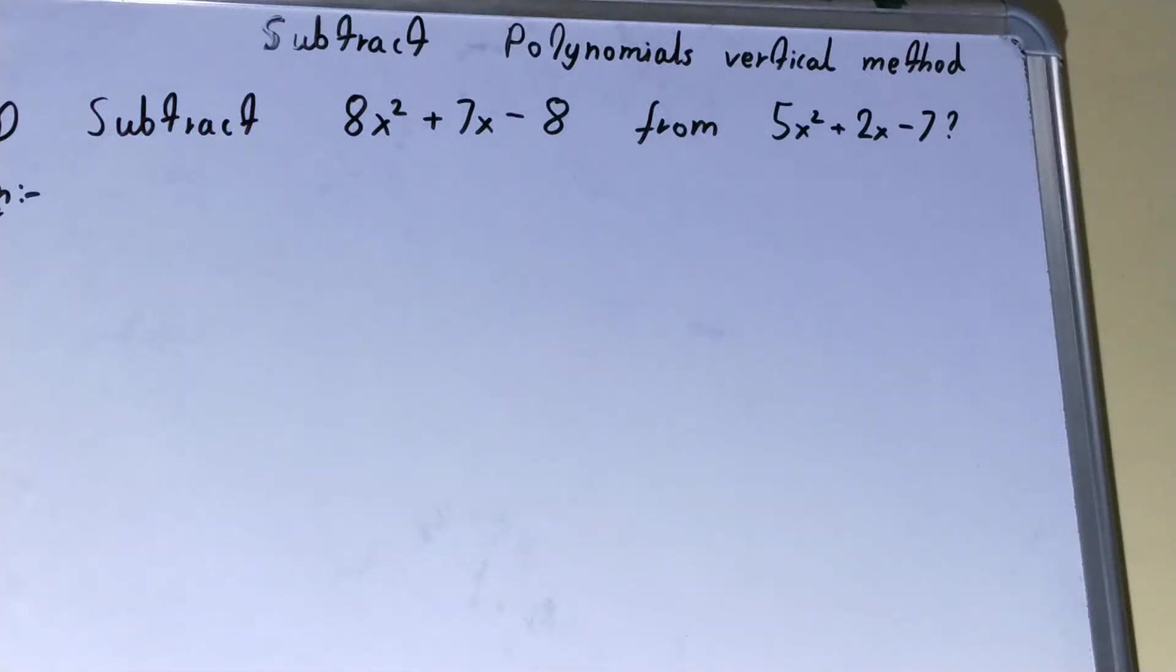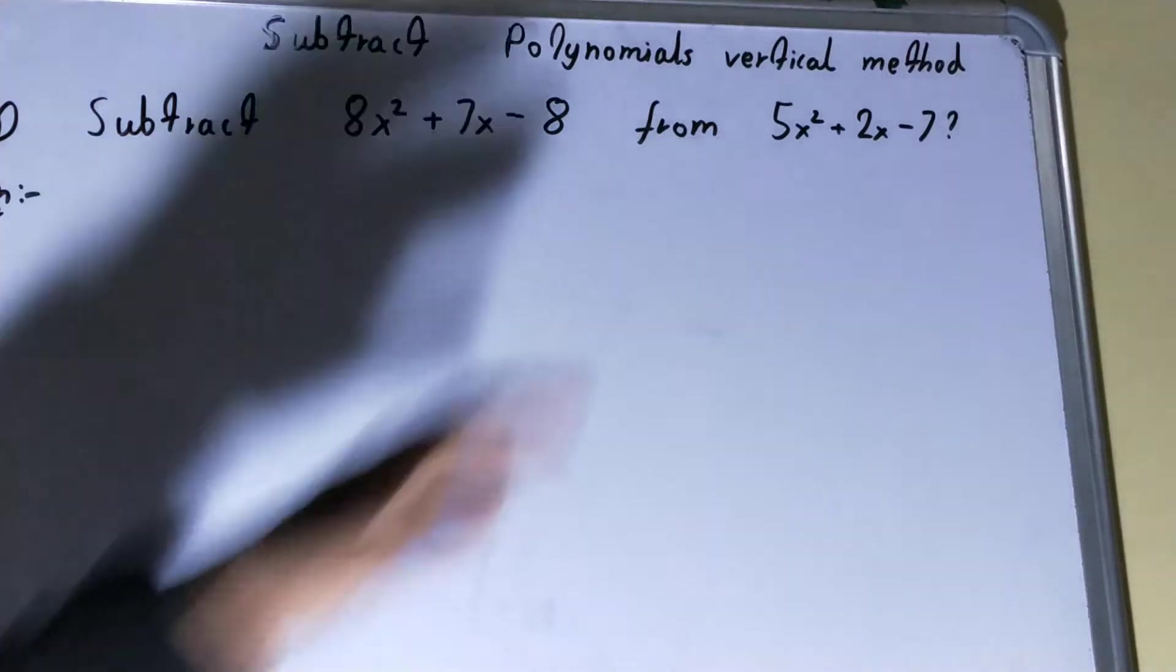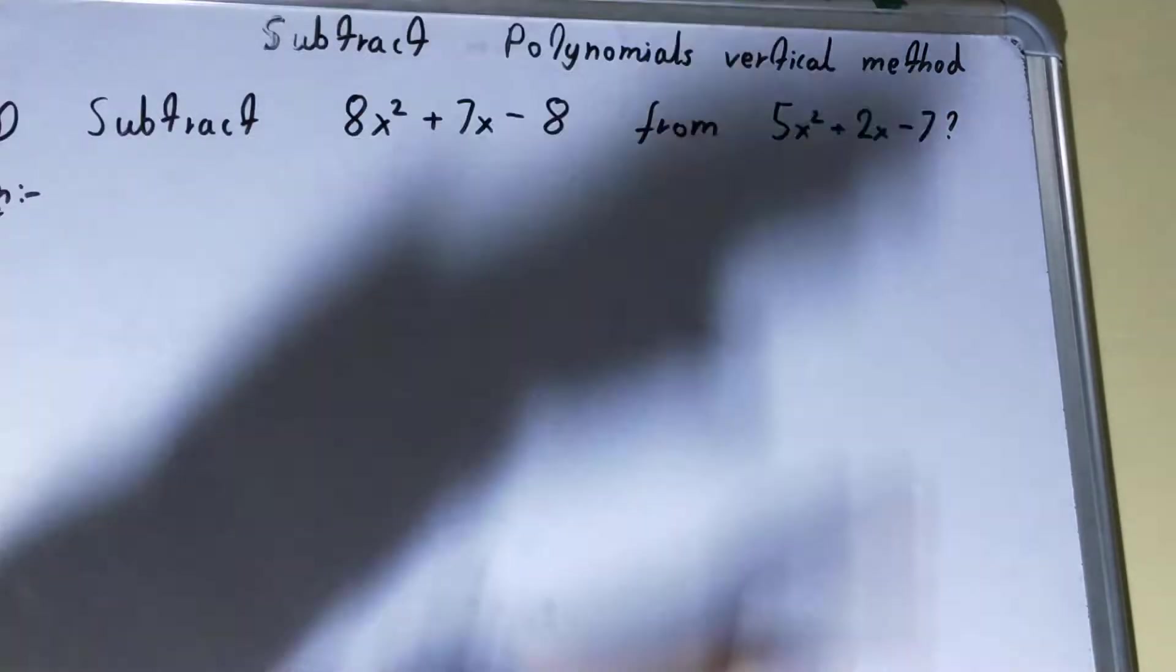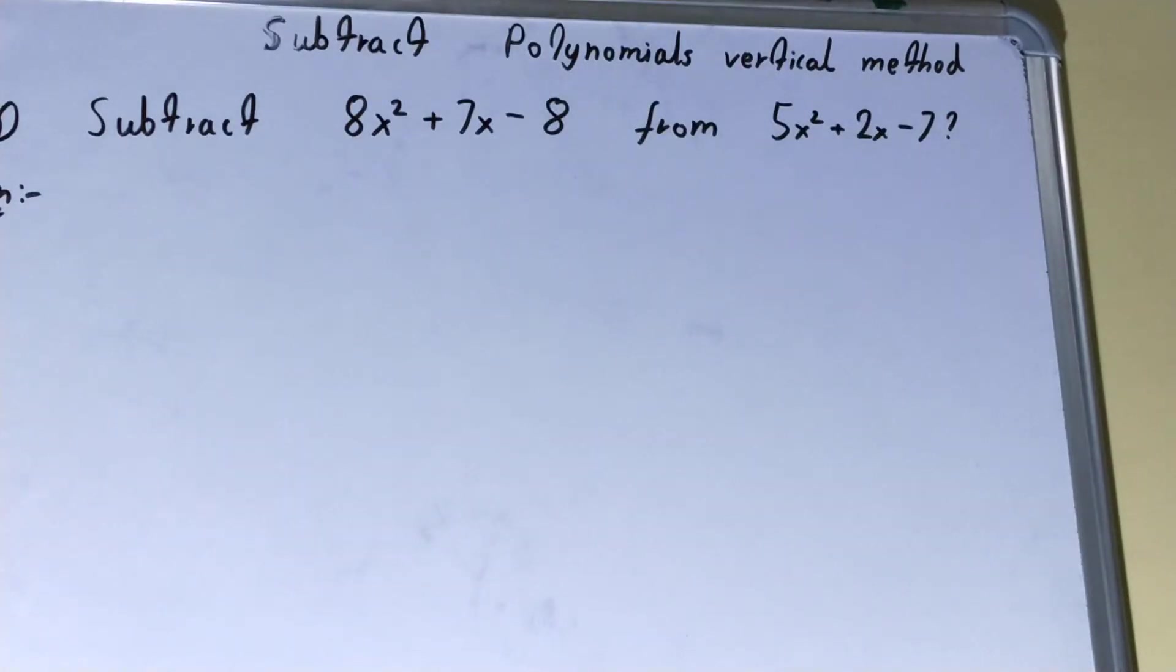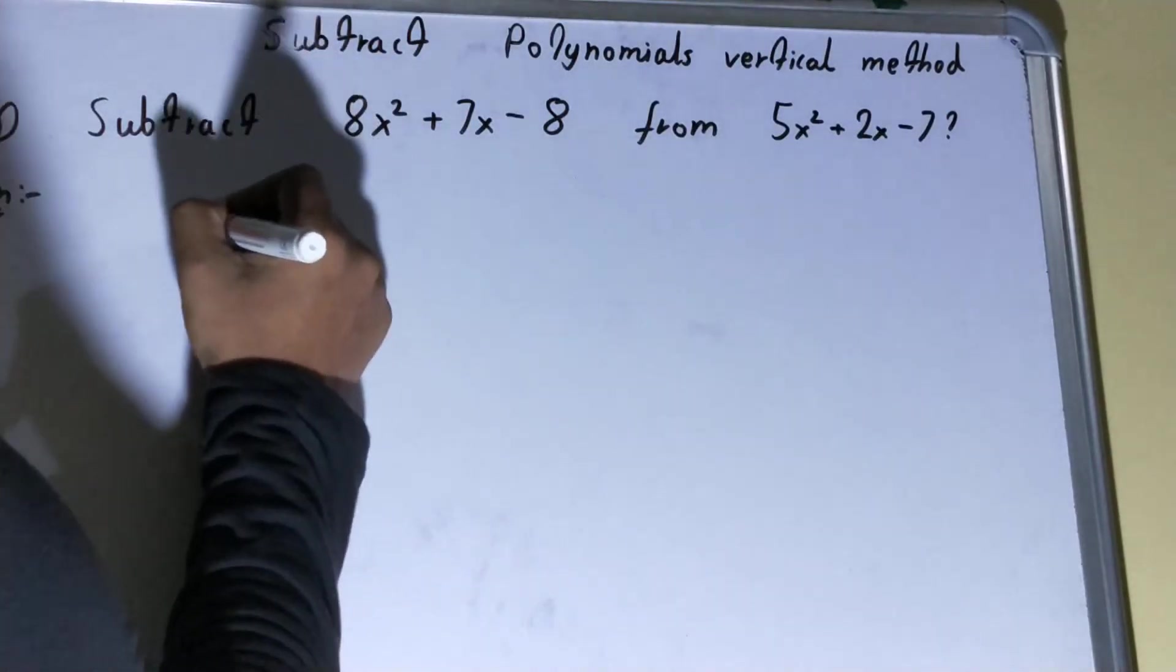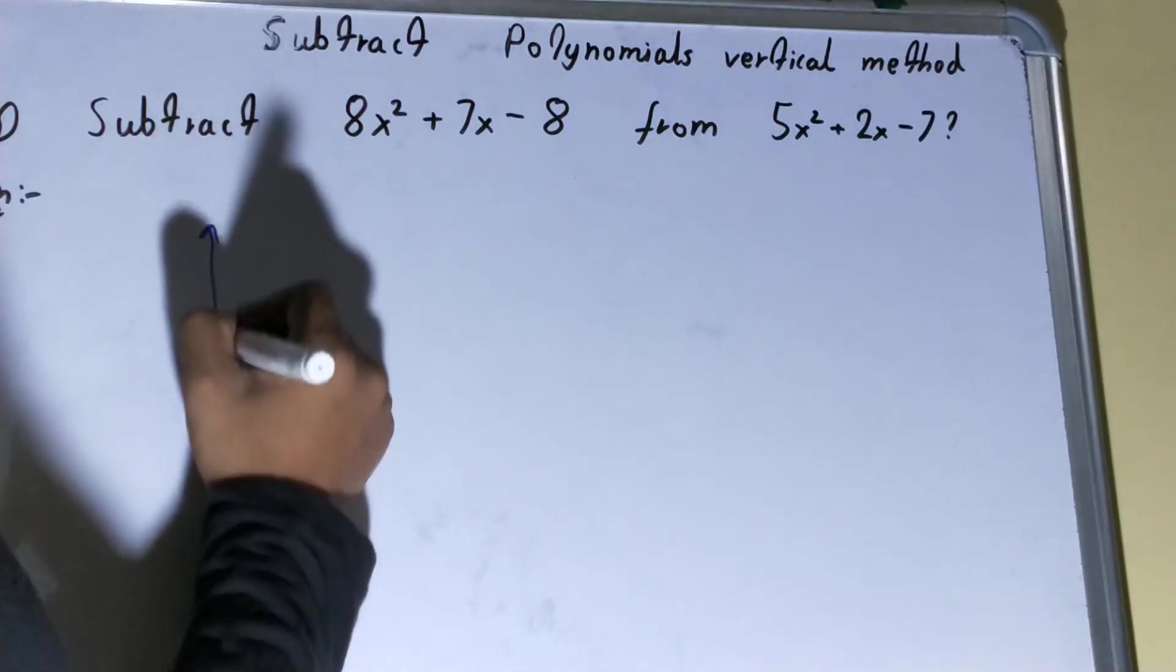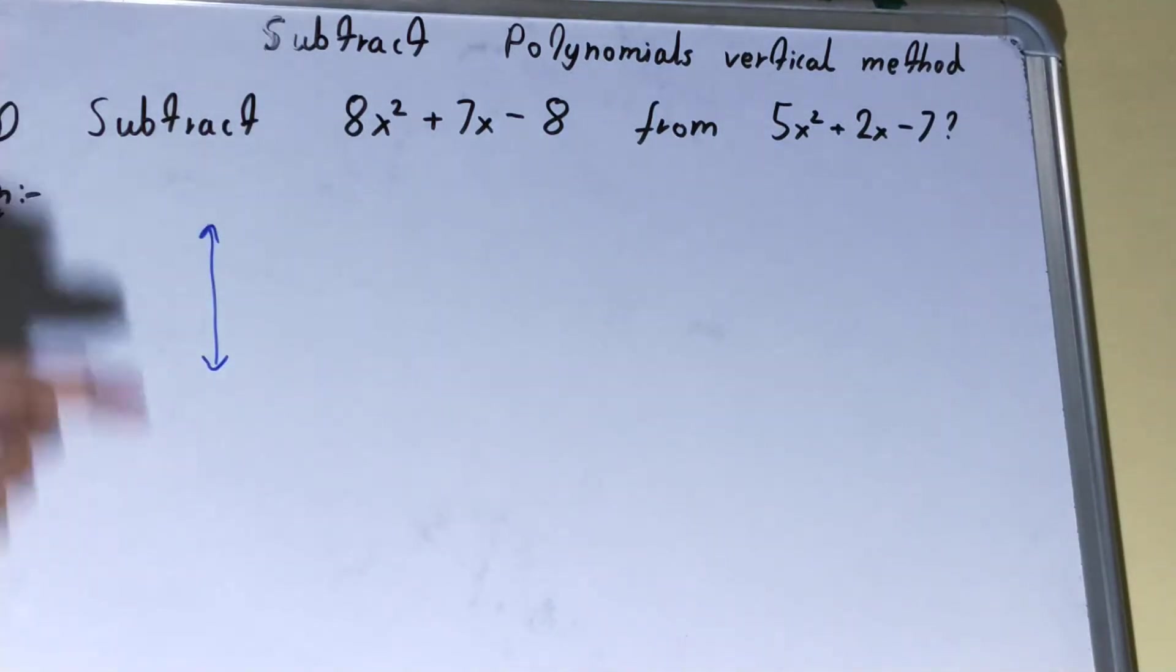Hello friends, in this video we'll show you how to subtract polynomials by the vertical method. The vertical method is when you place the set of polynomials in a vertical way, not in a horizontal way.